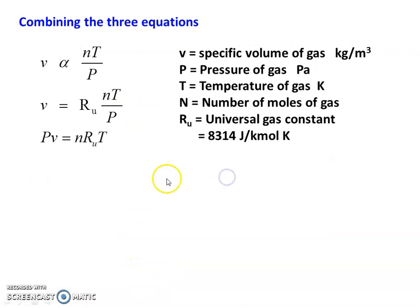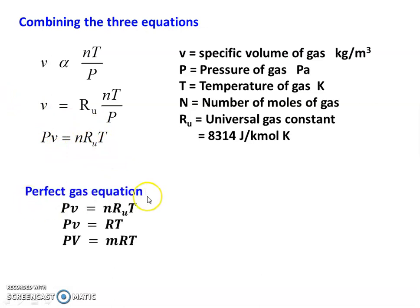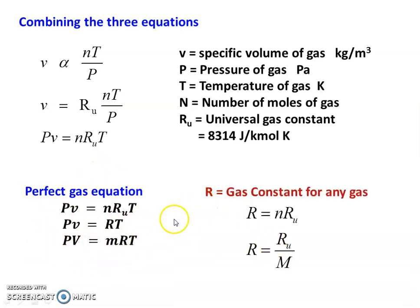Combining these, specific volume is directly proportional to N times T divided by P. Introducing a constant Ru, we get V equal to Ru times N times T divided by P, where Ru is the universal gas constant equal to 8.314 joules per kilogram Kelvin. Rearranging gives PV equal to N Ru T. The perfect gas equation has three forms: PV equal to N Ru T; Pv equal to RT; and PV equal to MRT. The gas constant R equals N times Ru, or R equals Ru divided by molecular weight.